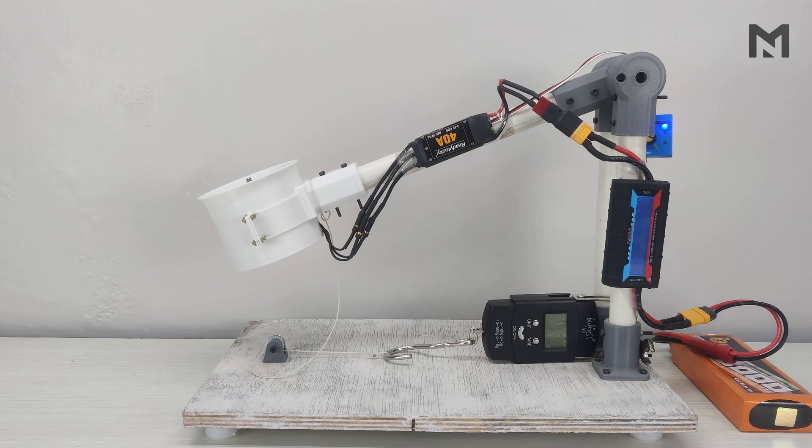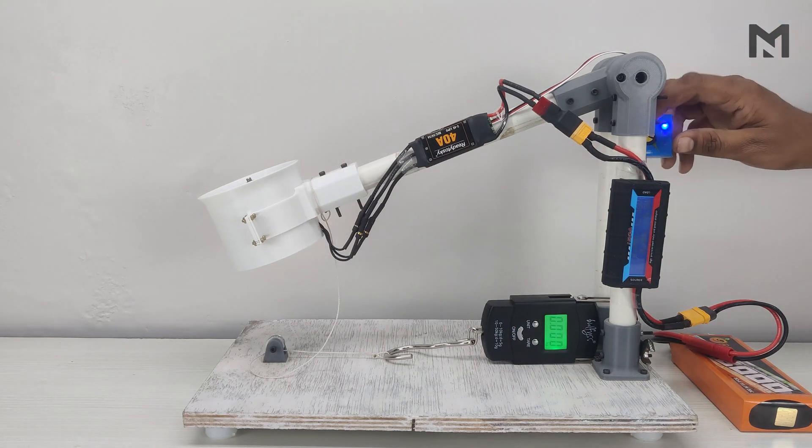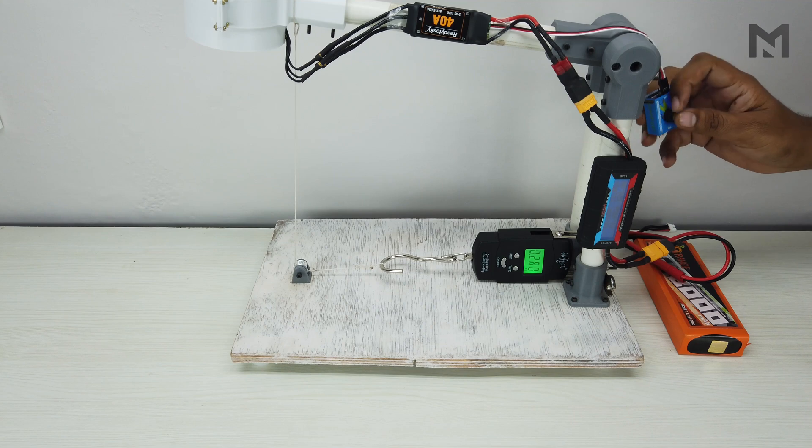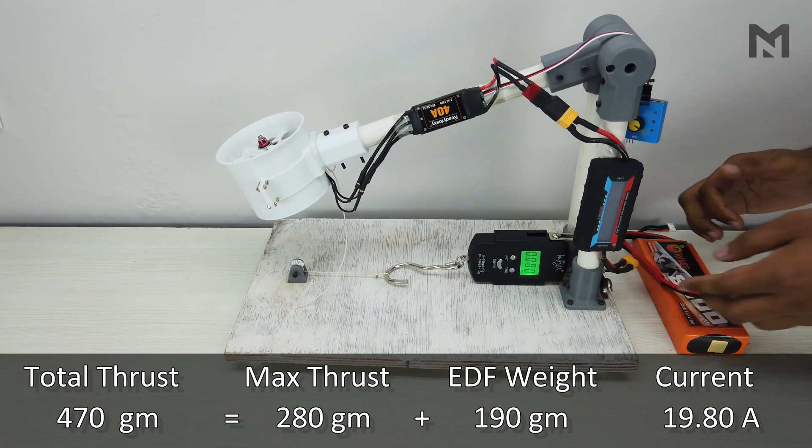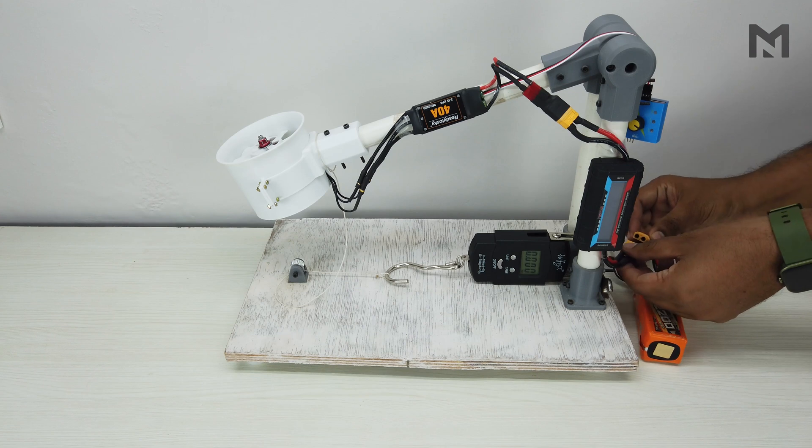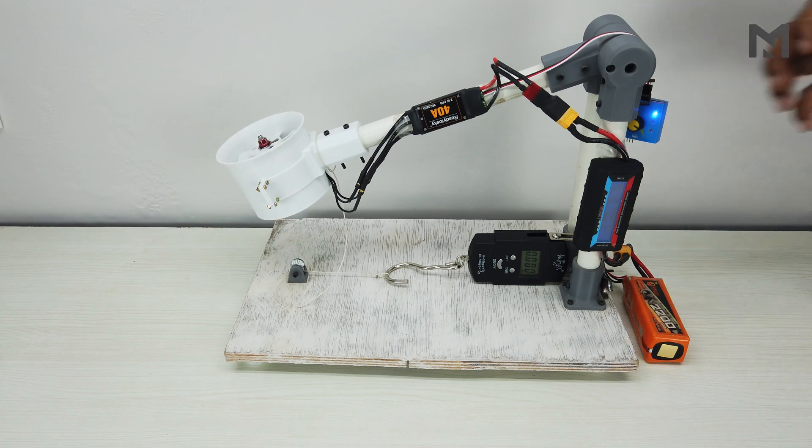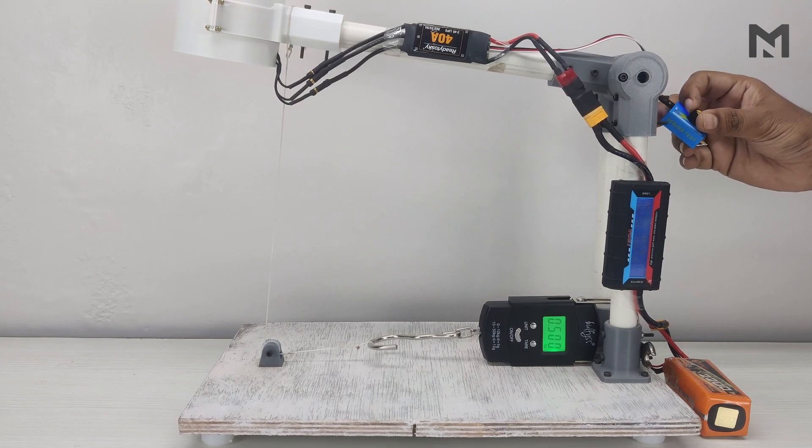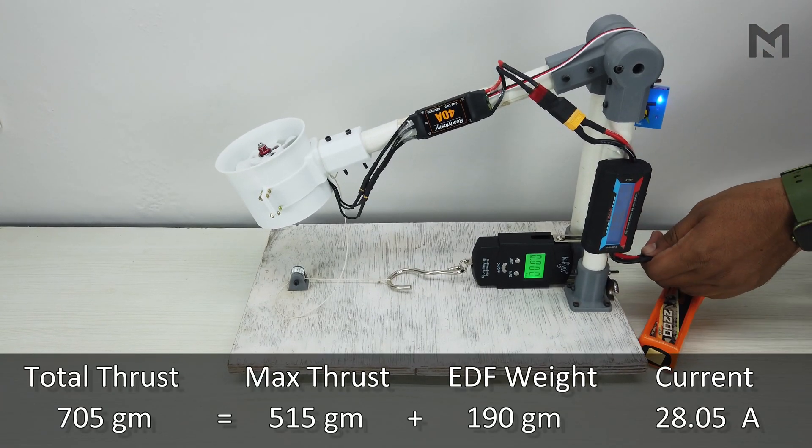Now connect the battery and test the thrust. The total thrust we get is 470 grams at 19.80 Amperes. Now I will replace this battery with the 4S battery and check the thrust. The total thrust we get is 705 grams at 28.05 Amperes.